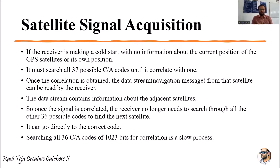So as an alternate method, it must search all 37 possible C/A codes until it correlates with one. It will randomly check all the signals received from the satellites — checking almost 37 possible C/A codes — and from that it will consider whichever one provides the strongest correlation.